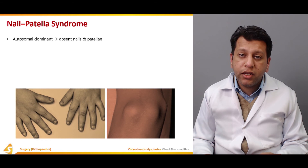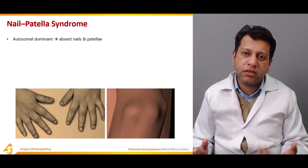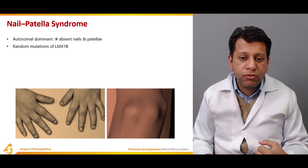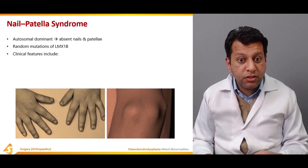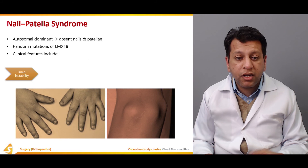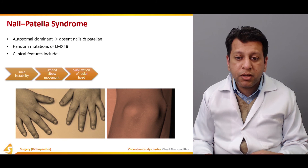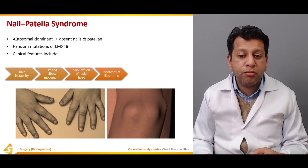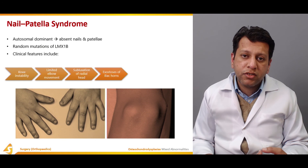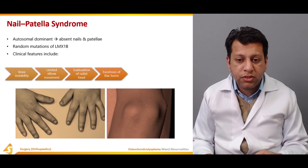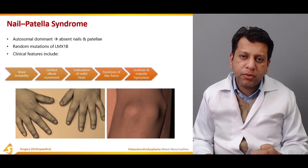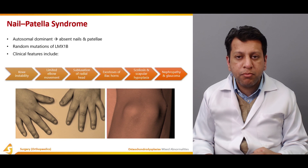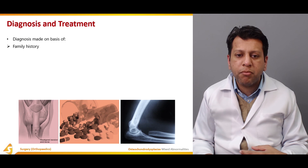Coming to nail patella syndrome: it is a very rare, autosomal dominant disease. By definition it affects the nail and the patella, but it can also affect the elbow and other joints. There are mutations in the LMX1B gene. Clinical features include knee instability, limited elbow movement often due to hyperextension, subluxation of the radial head causing limited elbow movement, and exostoses of the iliac horns visible on pelvic X-rays. There may also be scoliosis and associated spinal deformities, as well as nephropathy and glaucoma.